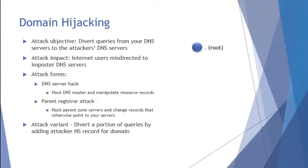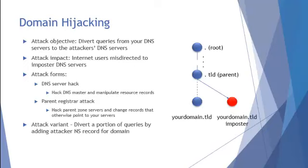The second form of attack is the parent registrar. Example.com's parent is .com, so if someone were able to log in as your account and make changes to your NS records or glue records, they would have a way to redirect resolvers trying to gain access to your legitimate destinations. Traversing down the tree — from the root, down to .com, and legitimately down to yourdomain.tld — if someone manipulates the set of nameserver records for yourdomain.tld, your resolver could actually select an imposter nameserver, query that nameserver, and get inappropriate information with respect to destinations the resolver is legitimately trying to connect to.